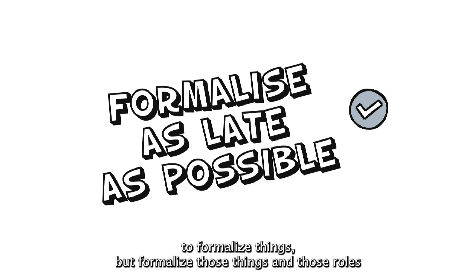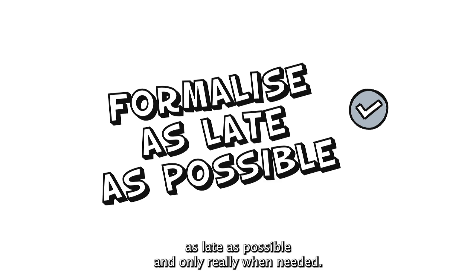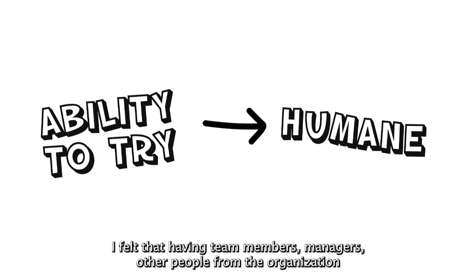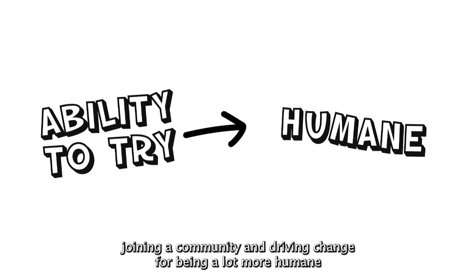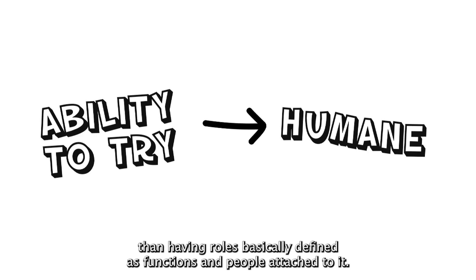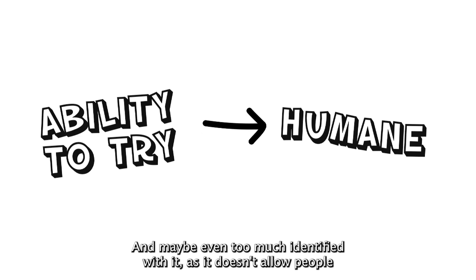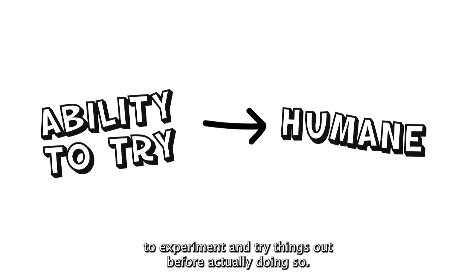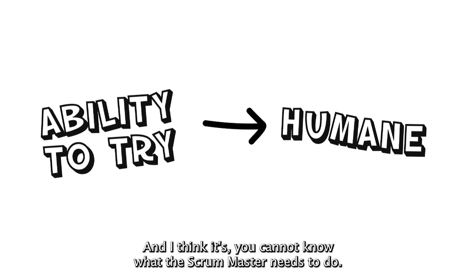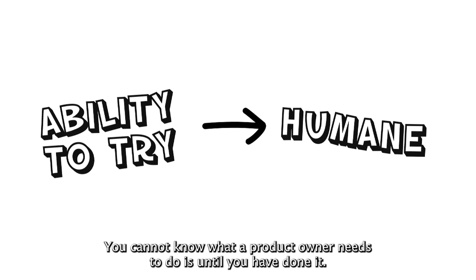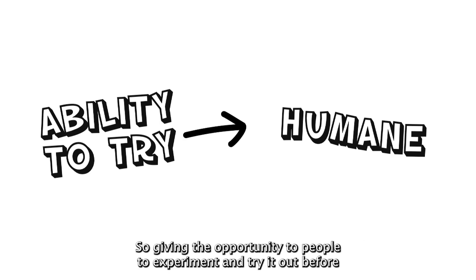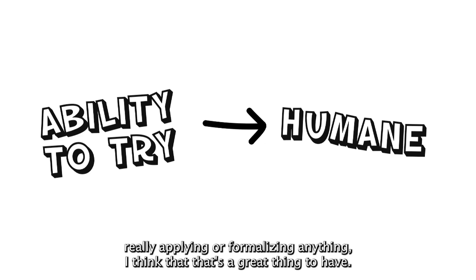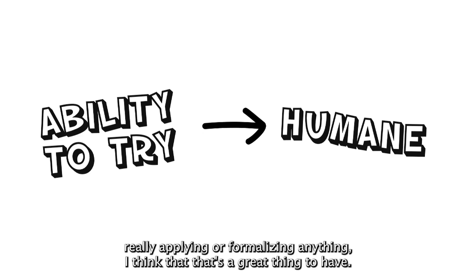To be honest, you might want or need to formalize things eventually, but formalize those roles as late as possible and only really when needed. I felt that having team members, managers, and other people from the organization joining a community and driving change forward is a lot more humane than having roles defined as functions with people attached to them — and maybe even too identified with them — because it doesn't allow people to experiment and try things out first. You cannot really know what a Scrum Master needs to do, or what a Product Owner needs to do, until you've actually done it. So giving people the opportunity to experiment before formalizing anything is a great thing.